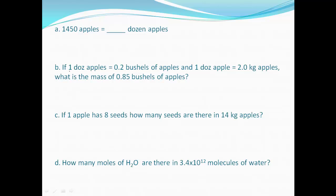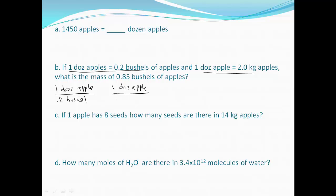So we have a couple of conversions here. One dozen apples equals 0.2 bushels. So we can write one dozen apples per 0.2 bushels. We also have one dozen apples equals two kilograms.